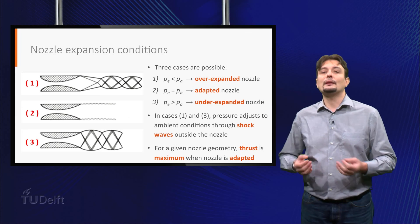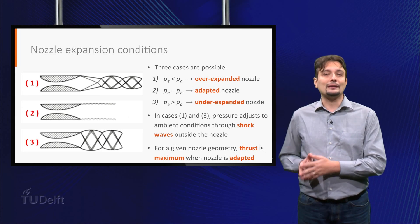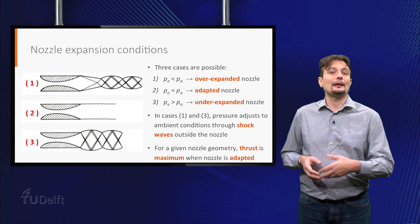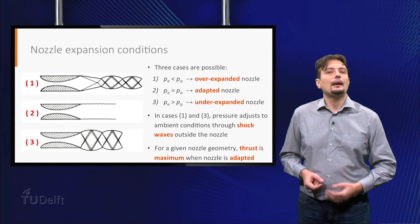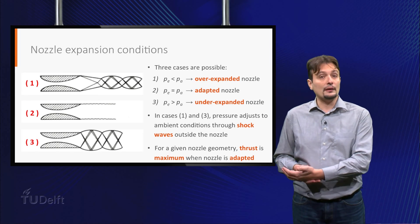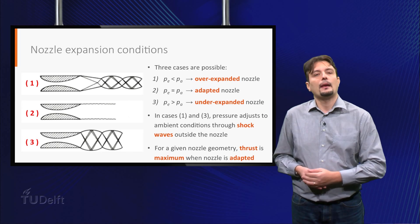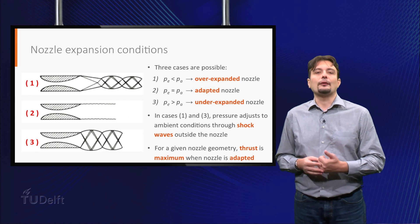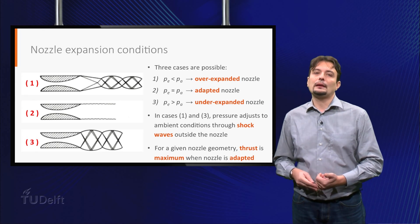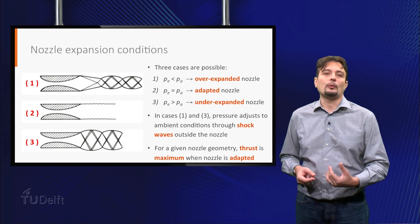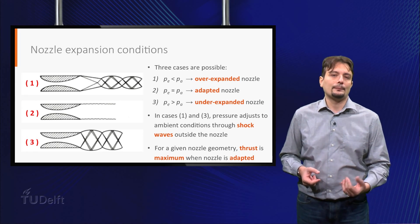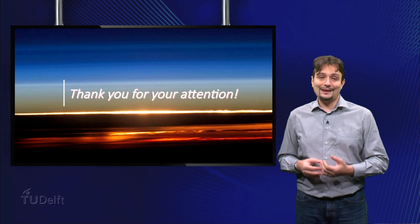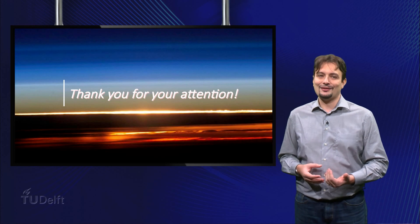We have now derived the equations for the three flow parameters that we needed and thus achieved our objectives. In the next video, we will see a few other important rocket performance parameters. Thank you for your attention.